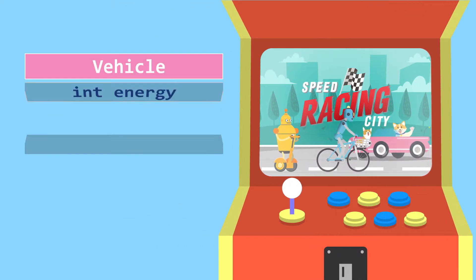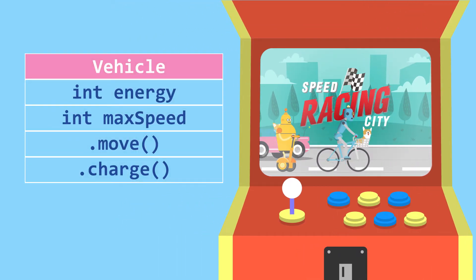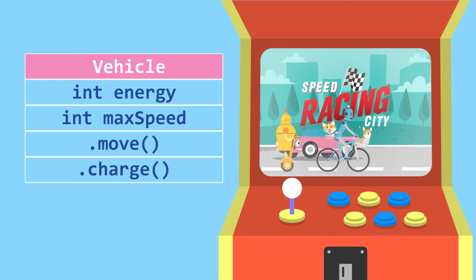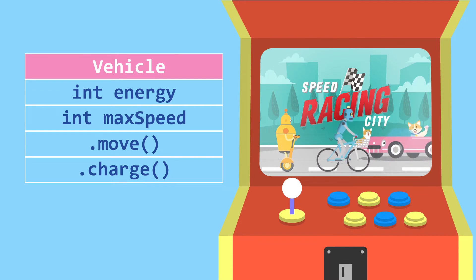These vehicles have common attributes. They need fuel or some energy source to move and have a maximum speed. They are able to move and need charging when fuel or energy runs low.